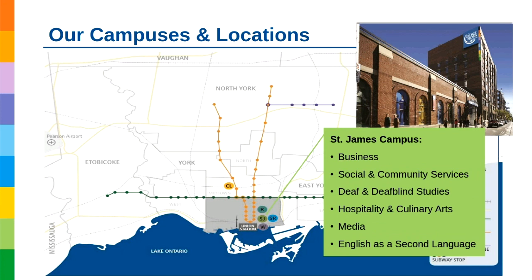Moving downtown to the St. James campus — our other main campus. This is where you find all the business programs and social and community service programs. We're one of the few colleges in Ontario with a deaf and deafblind studies program, teaching American Sign Language — we developed the first degree in Canada for interpreters. St. James is also home to our popular School of Hospitality and Culinary Arts, one of the biggest cooking schools in Canada, with a restaurant across the street. We also have media programs and English as a second language.